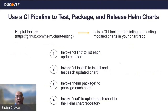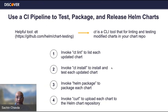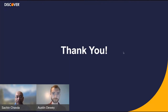Since we are building Helm charts, we also run them through a CI/CD process. There is a CI pipeline which handles testing, packaging, and releasing the Helm chart based on specific version changes. We use the ct (chart testing) tool, which follows these steps: 'ct lint' lists all updated charts, 'ct install' installs the chart, and then it packages the chart and pushes it to Artifactory or the repository using the curl command. Thank you, and let us know if you have any questions.